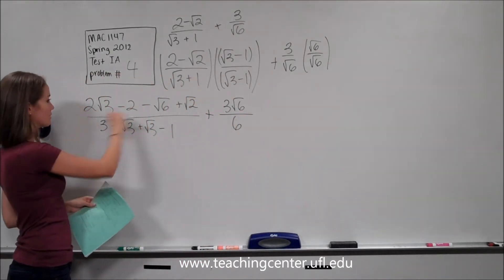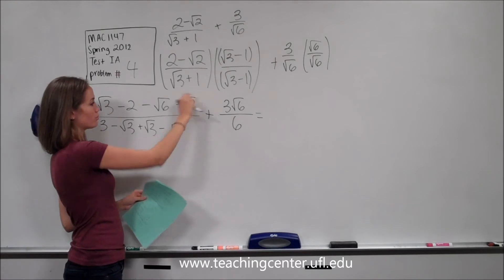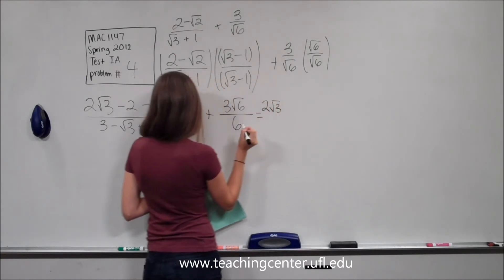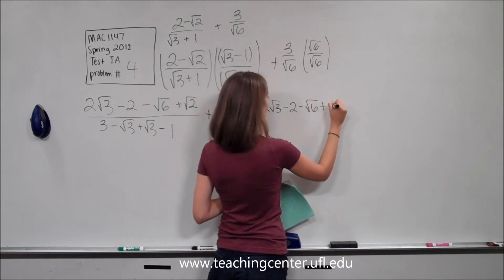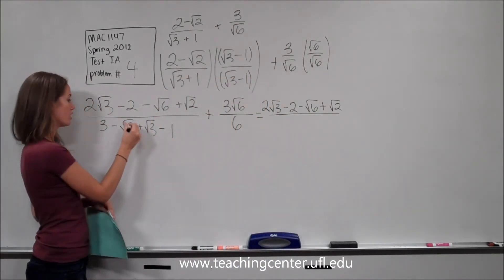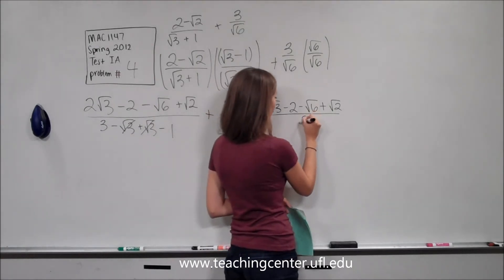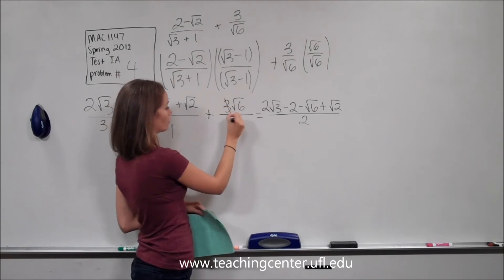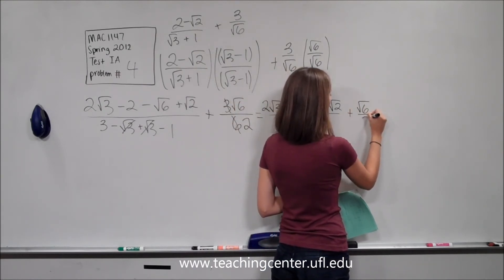Now we can simplify. The numerator of the first term is 2 square root of 3 minus 2 minus square root of 6 plus square root of 2, all over — and in the denominator, negative root 3 plus root 3 cancel each other out, so we're left with just 3 minus 1, which equals 2. Then for the second term, we have 3 over 6, which simplifies — the 3 cancels with the 6 leaving a 2 in the denominator — giving us plus square root of 6 over 2.